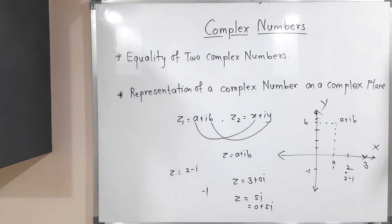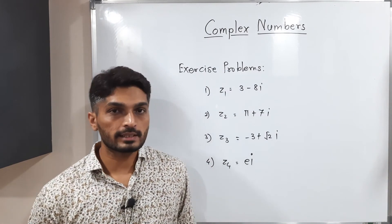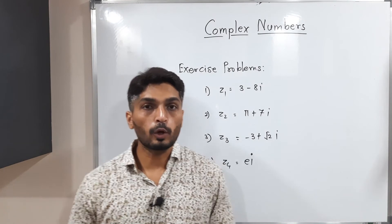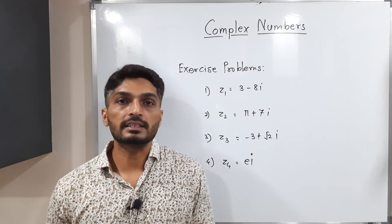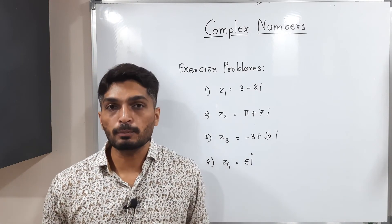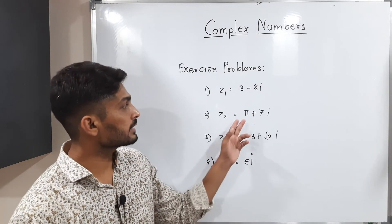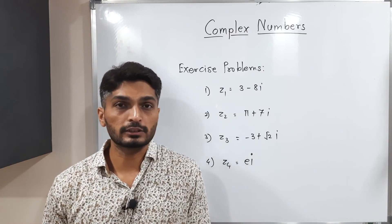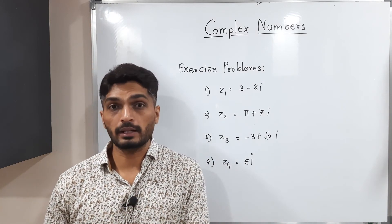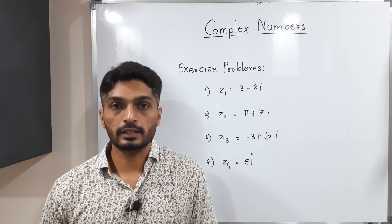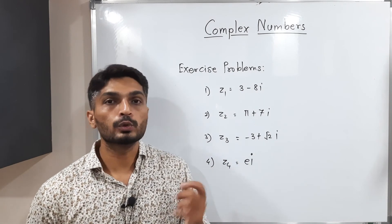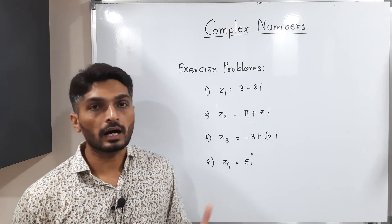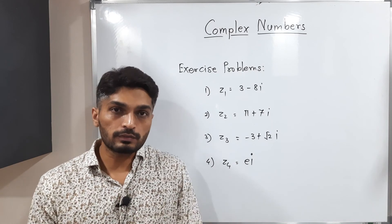Now here are a few exercise problems for you to plot on a complex plane. The first is z1 equals 3 minus 8i. The second is pi plus 7i — pi is an irrational number approximately equal to 3.142. The third is minus 3 plus root 2 times i. Find these values and try to plot those points on a complex plane.